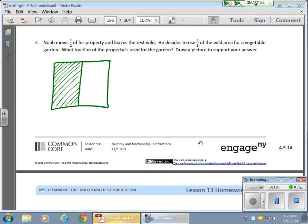Now it says here, he decides to use 1 fifth of the wild area, so I guess this is the wild area. 1 fifth of that for vegetable garden. So I'm going to take this wild area, I'm going to break it into fifths. 1, 2, 3, 4, 5. So I have five parts.